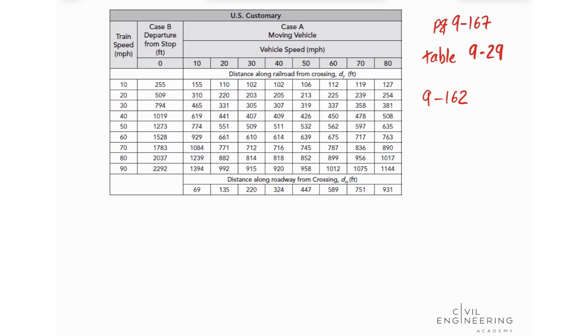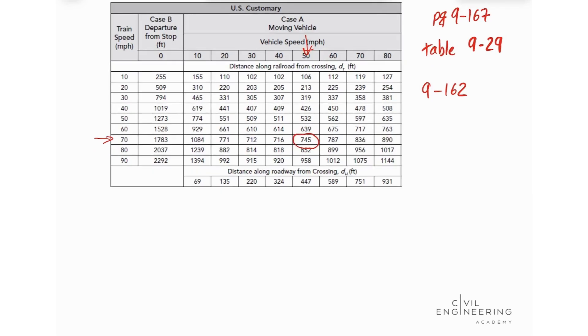We would have to see here this train is operating at 70 miles per hour and our vehicle is at 50 miles per hour. So we would go and find this value right here. In this case, it's much easier just to look at the table to get this value. But imagine if the problem had given you the train speed of 65 miles per hour. This is not in the table, so you would have to utilize the equation. So keep that in mind.